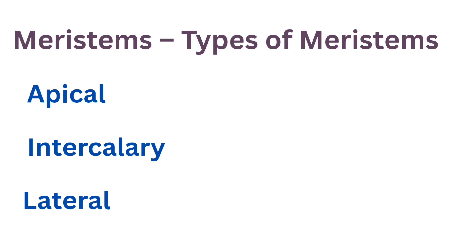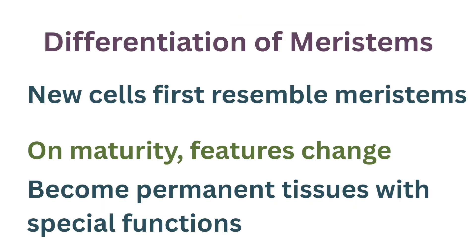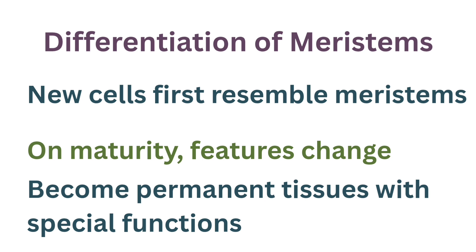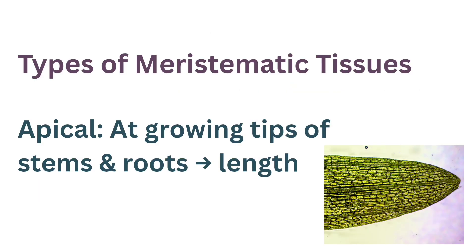Meristematic tissues are classified based on their location. Depending on the region where they are present, meristematic tissues are classified into three types: apical meristem, intercalary meristem, and lateral meristem. The new cells produced by meristems are first like meristematic cells; as they grow and mature their features change, and finally they become specialized and form different permanent tissues.